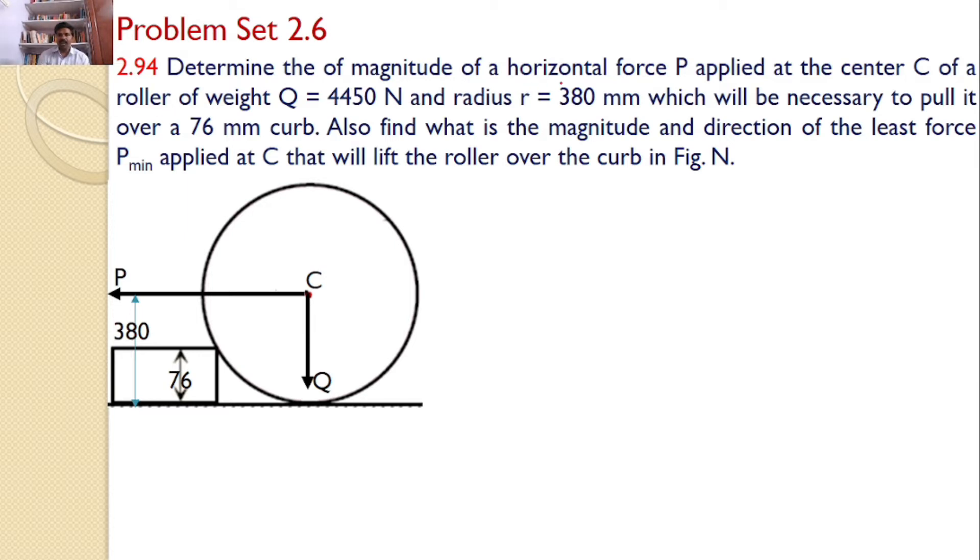Determine the magnitude of a horizontal force P applied at the center C of a roller of weight Q equals 4450 Newtons and radius r equals 380 mm, which will be necessary to pull it over a 76 mm curb. Also find what is the magnitude and direction of the least force applied at C that will lift the roller over the curb as shown in figure N.